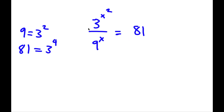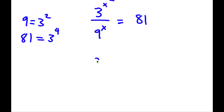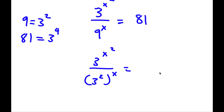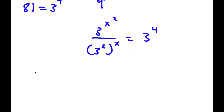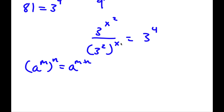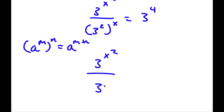So if I replace 9 and 81 with 3 squared and 3 to the power of 4, I have 3 to the power of x squared over 3 squared to the power of x, equal to 3 to the power of 4. Now if I have something in the form a to the power of m to the power of n, this equals a to the power of m times n. So 3 to the power of 2 to the power of x equals 3 to the power of 2x.